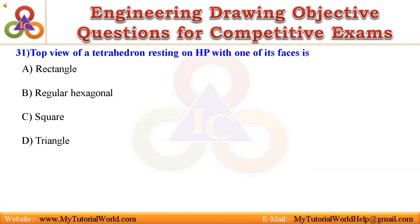Question 31. Top view of a tetrahedron resting on HP with one of its faces is: A. Rectangle, B. Regular hexagonal, C. Square, D. Triangle.